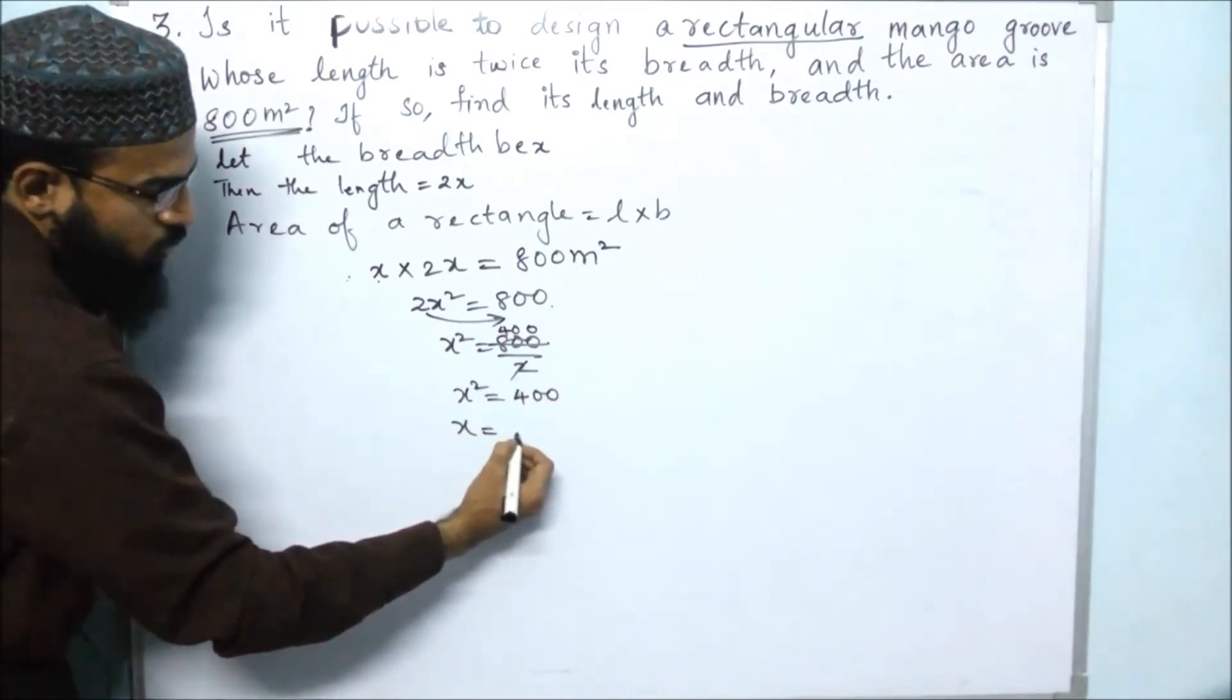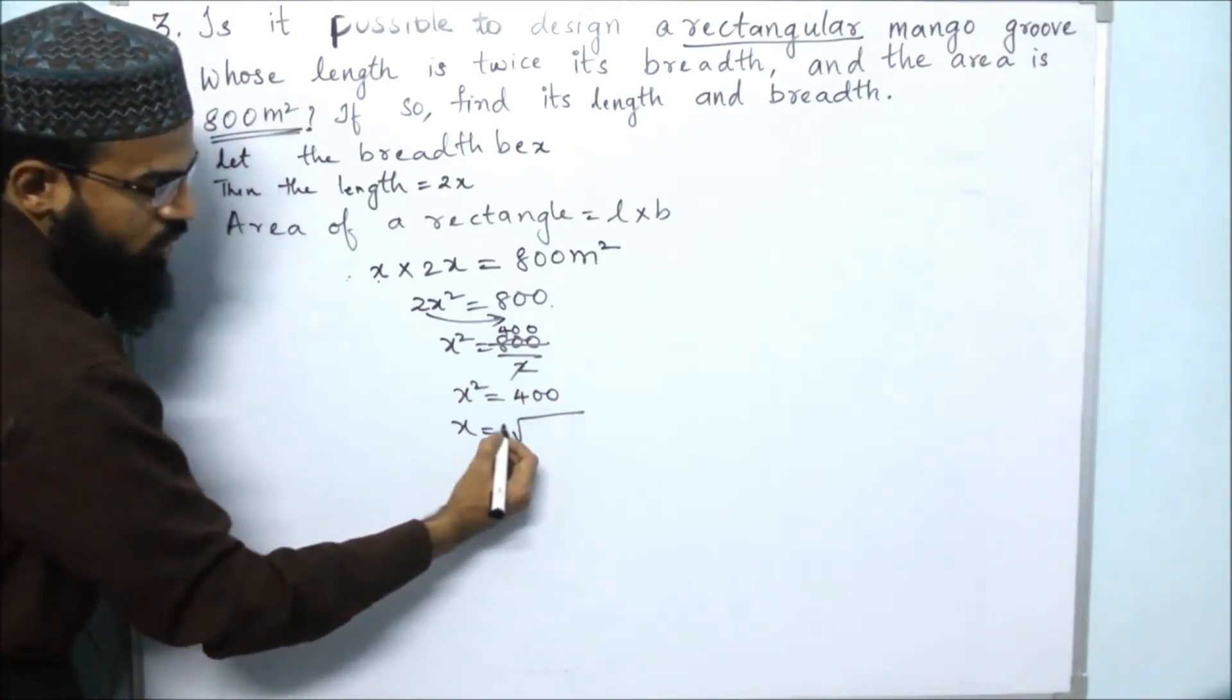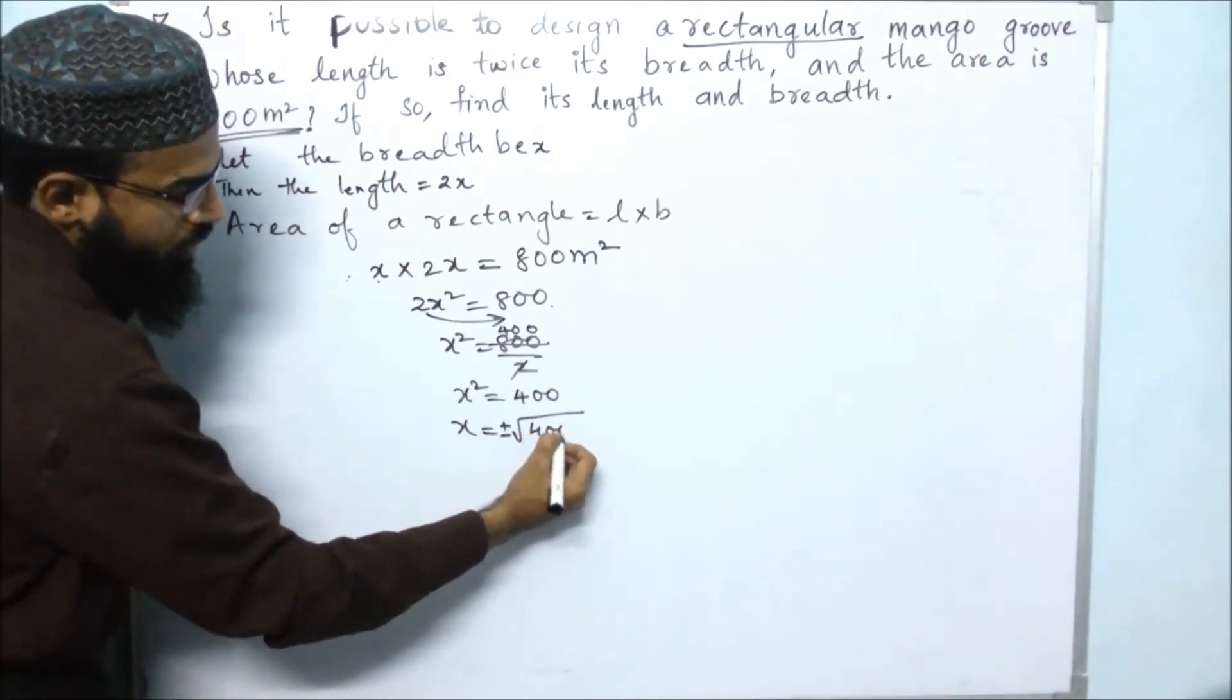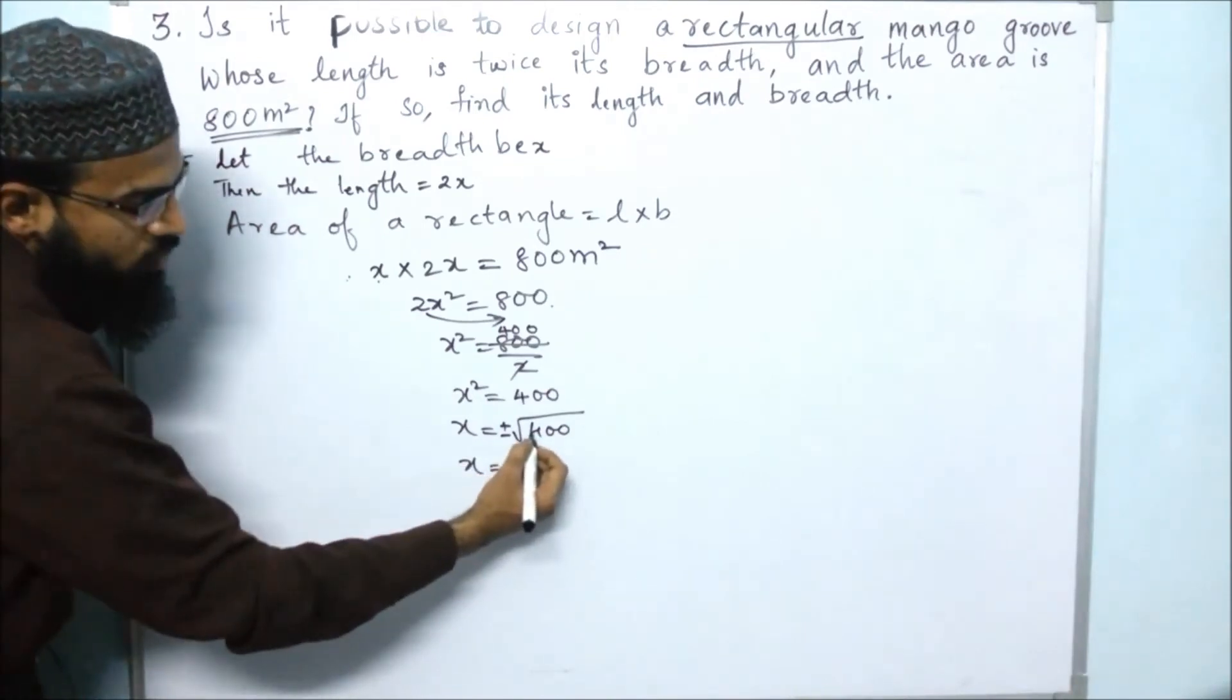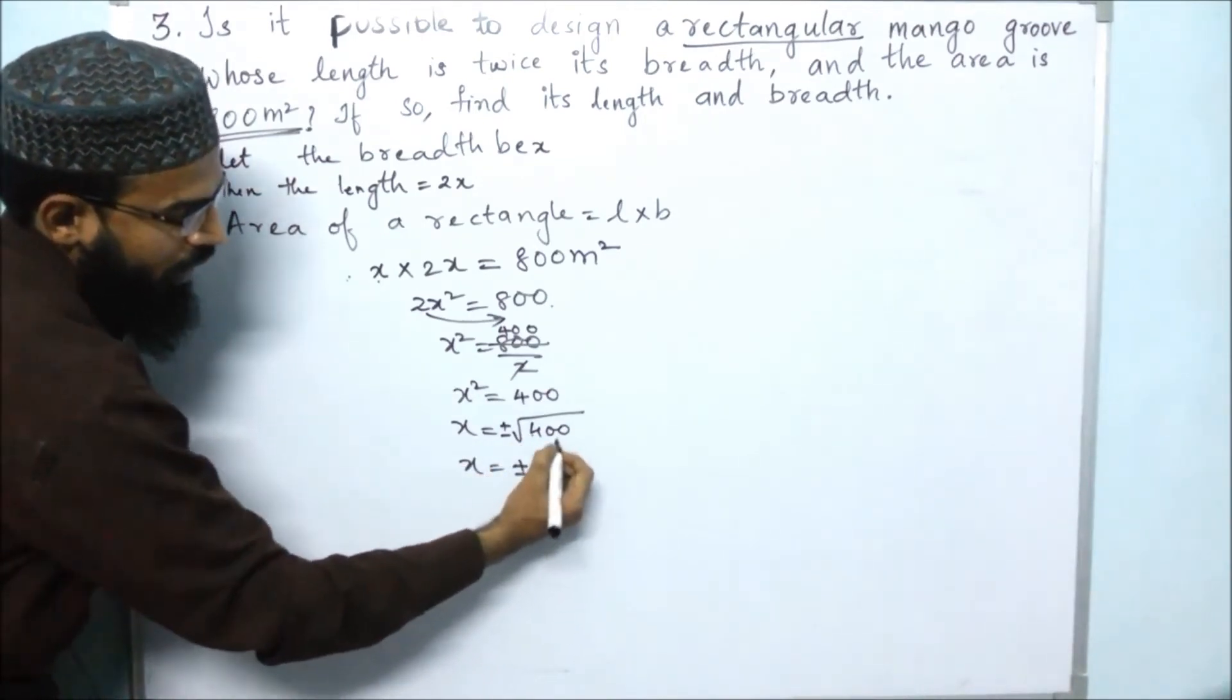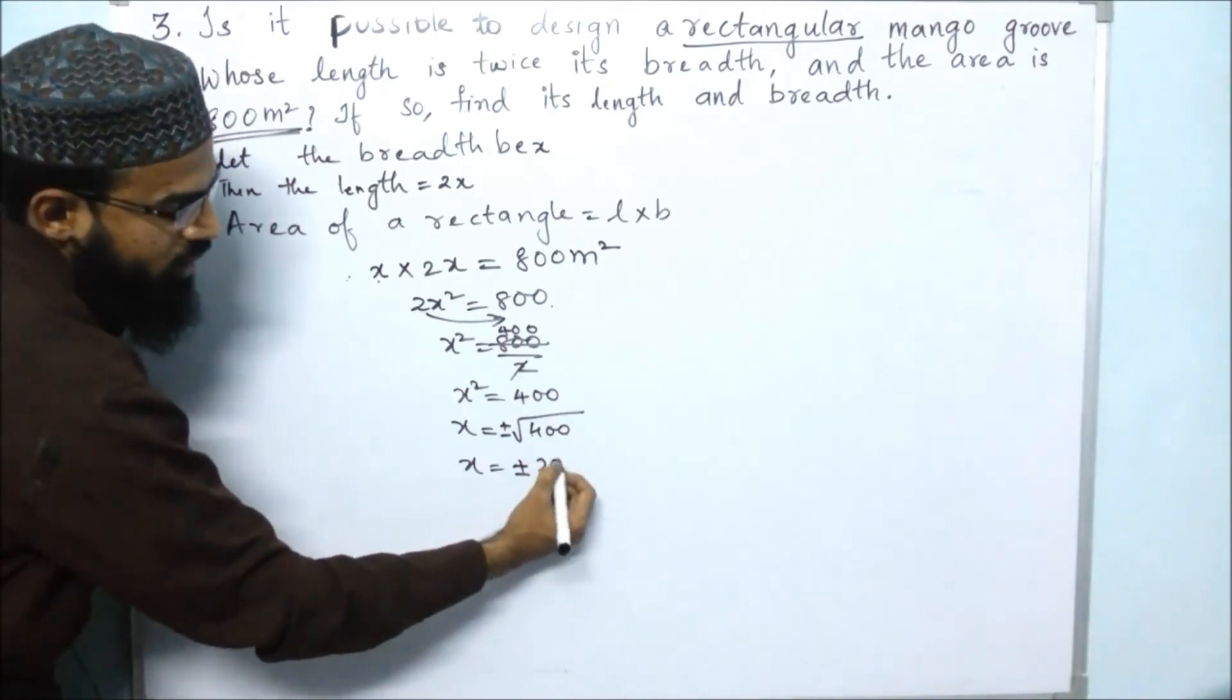It would be a square root, so we will get x equals plus or minus square root of 400. As you know, square root of 400 is 20.